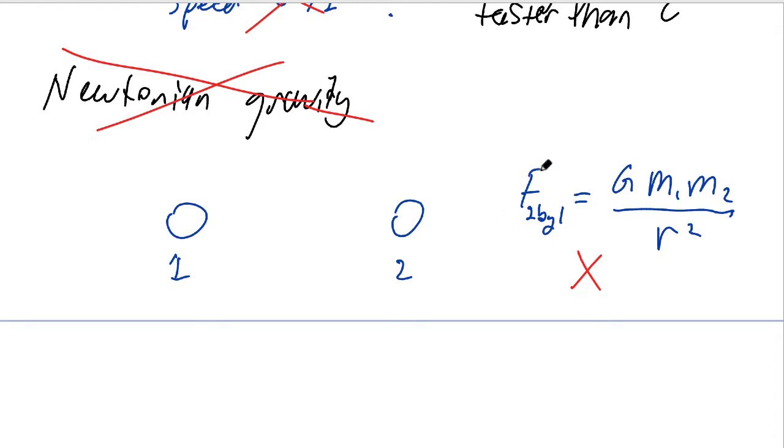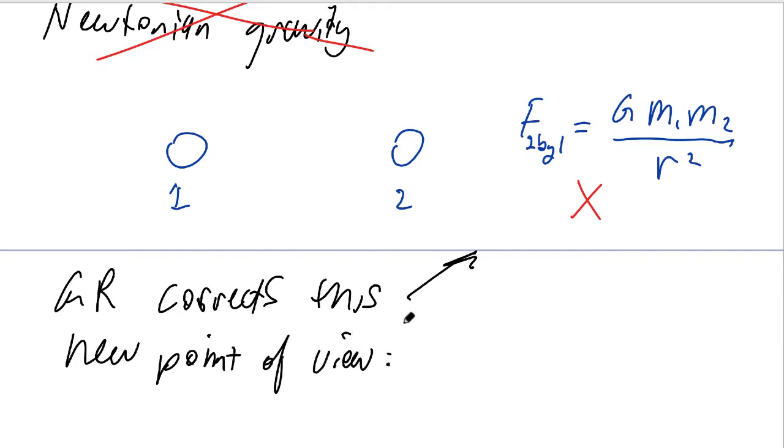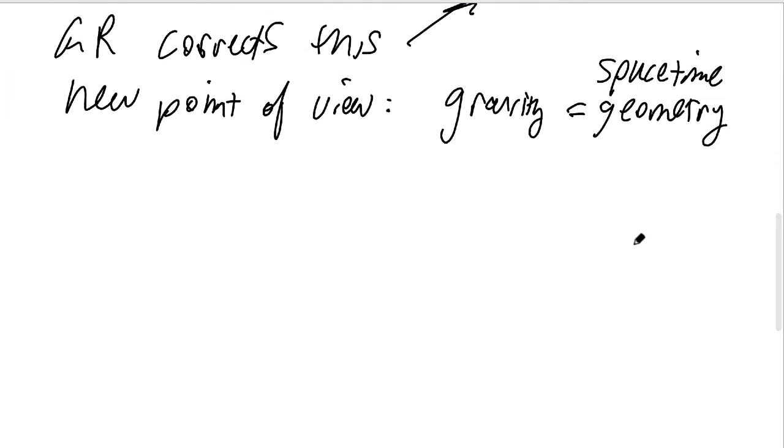General relativity corrects this defect in Newtonian gravity. And in the process, develops a new point of view. The new point of view is that gravity is actually a manifestation of geometry, in particular, the geometry of spacetime. What does geometry have to do with gravity? The geometry of spacetime determines inertial frames.